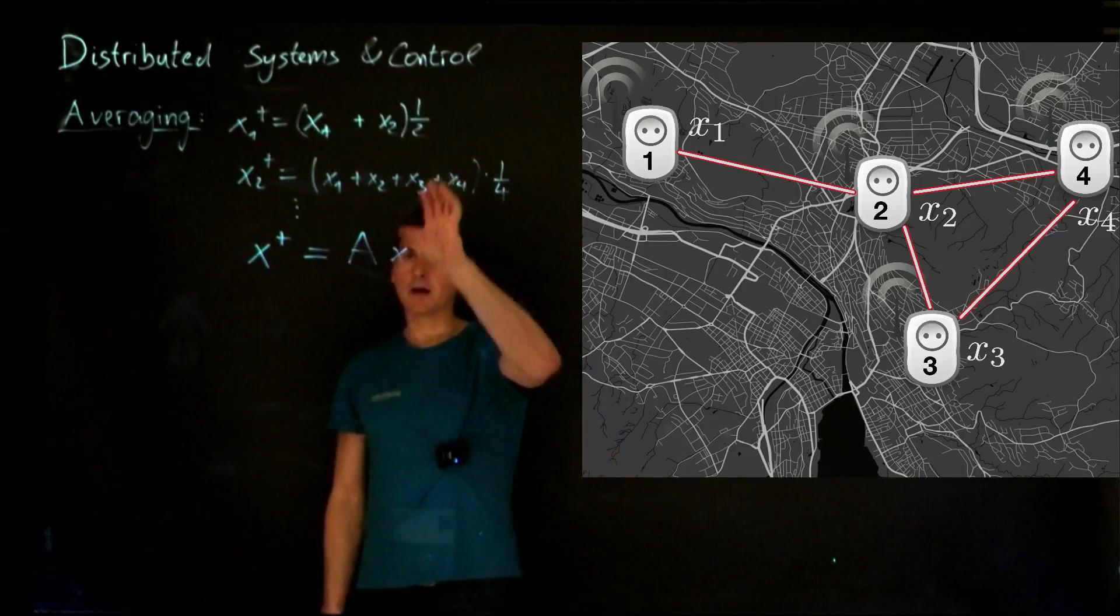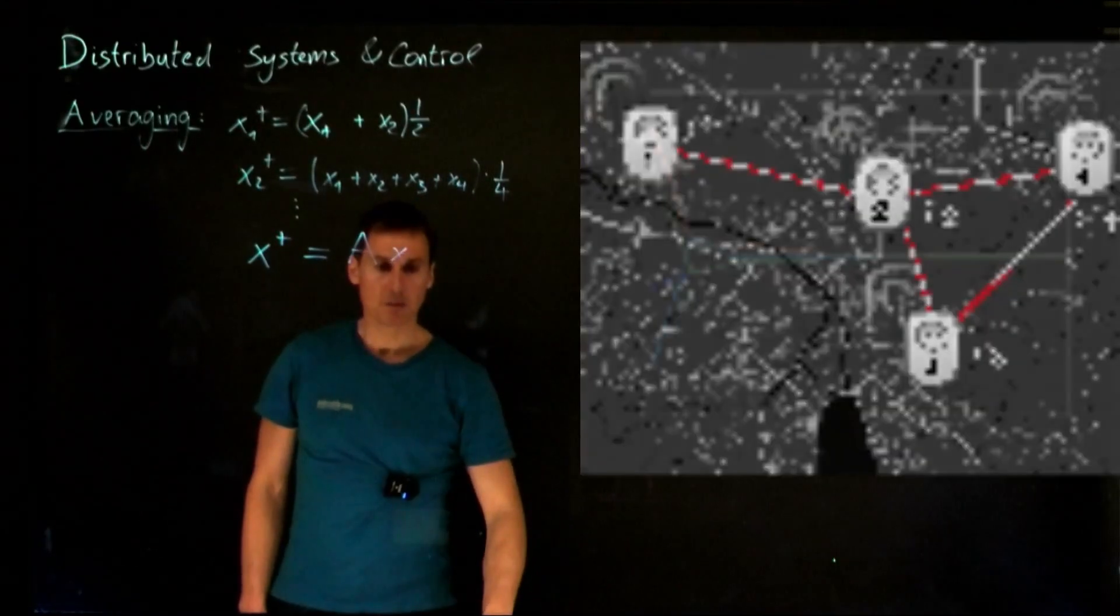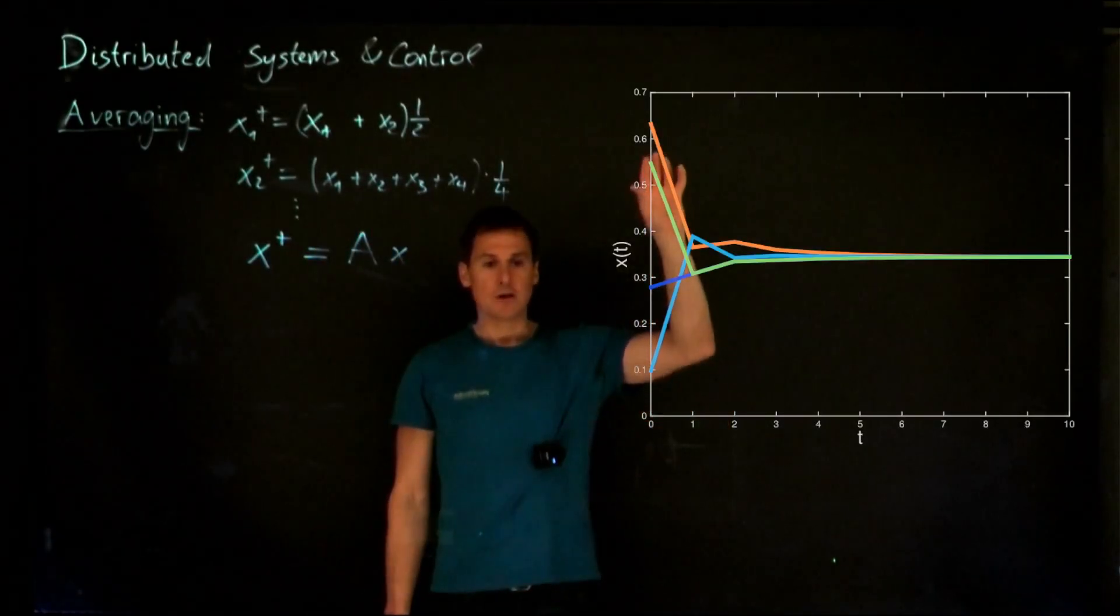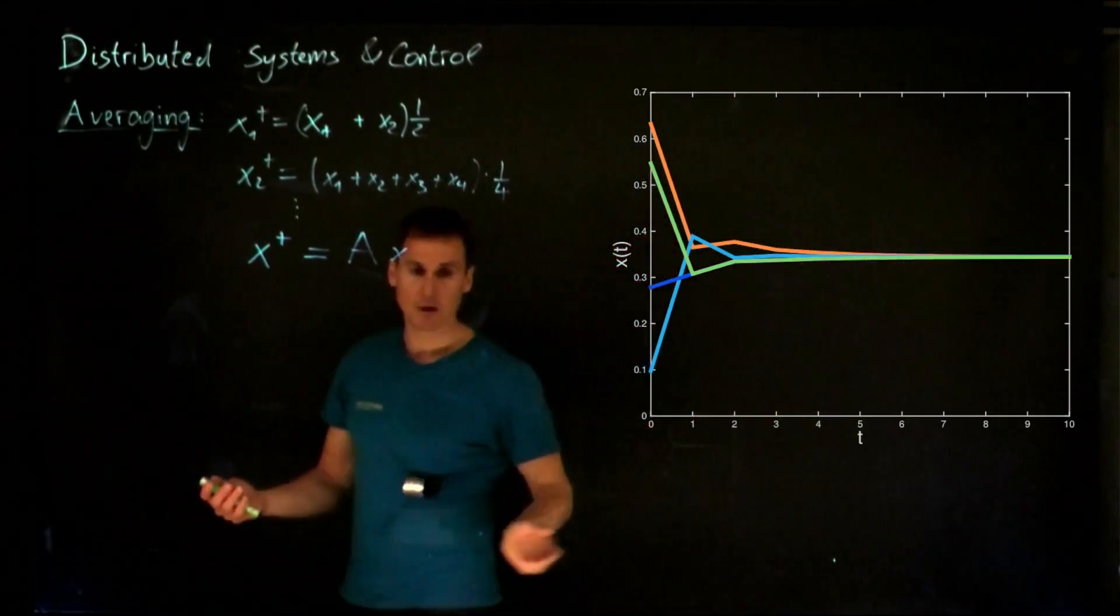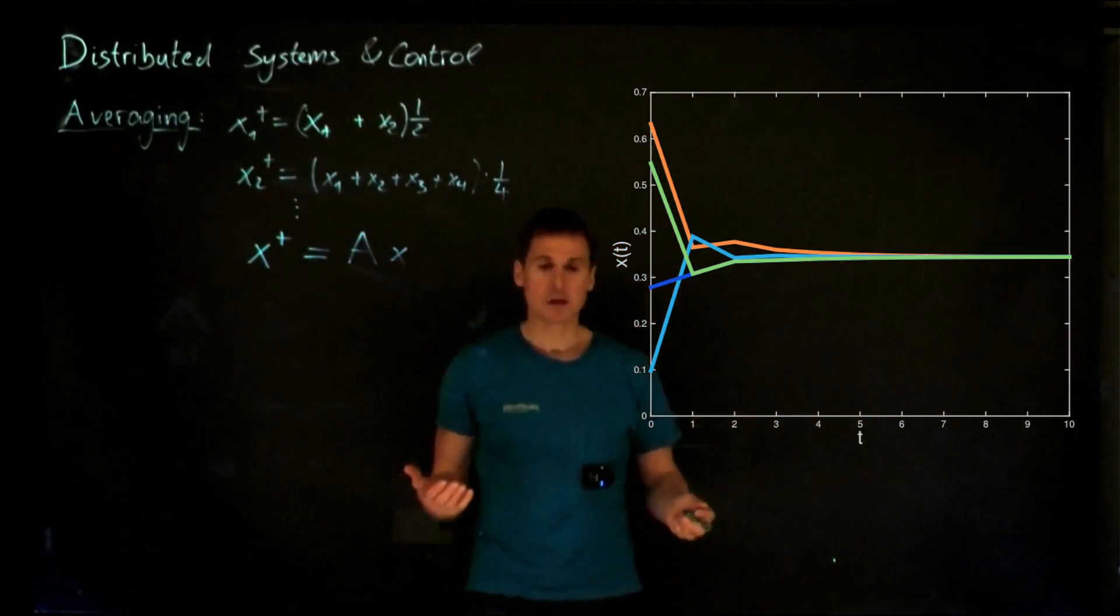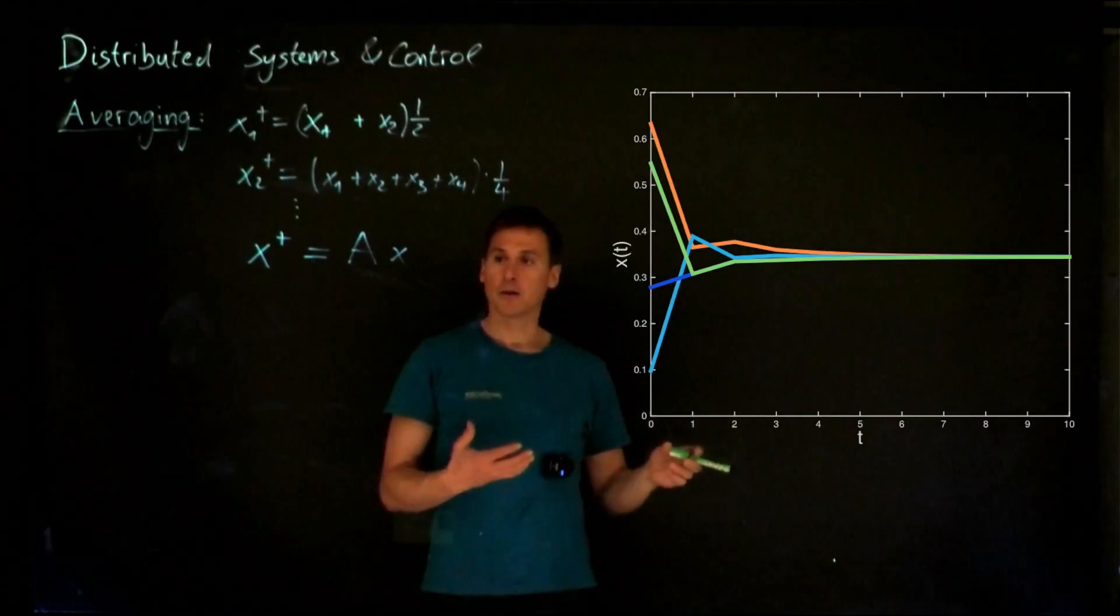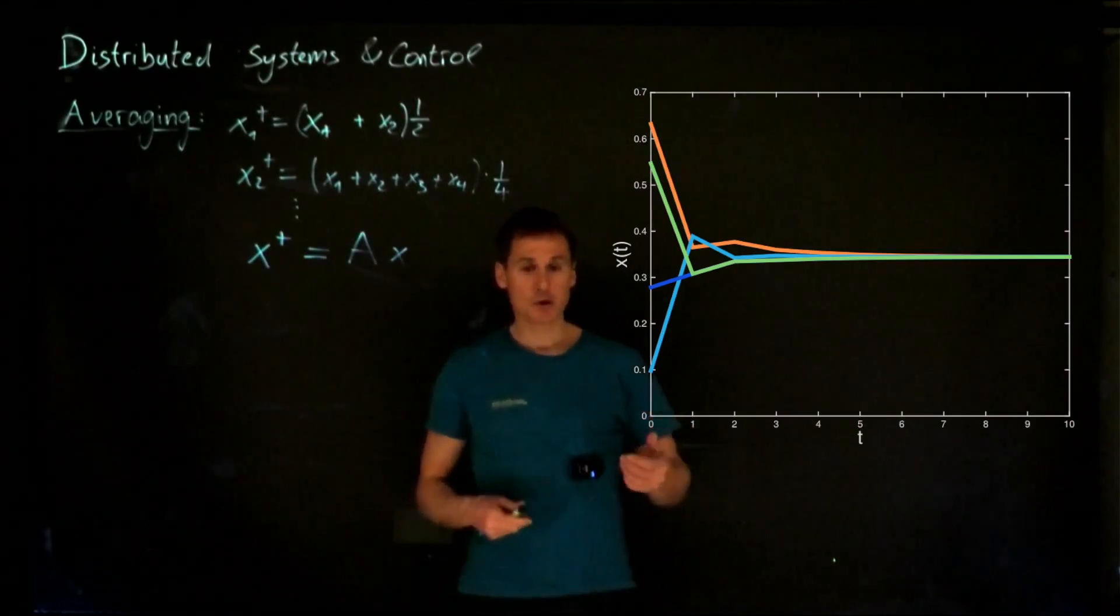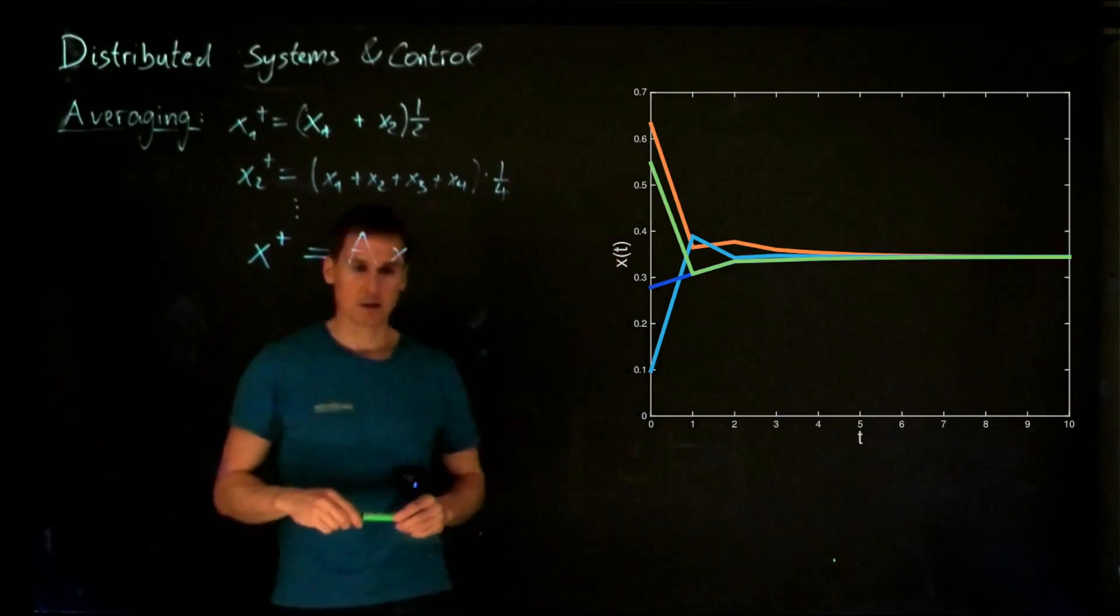Now, what happens when you carry out this algorithm and you keep on averaging? Well, if you're lucky, things are going to converge, which will actually be the case here for this particular example. So you start off with all the initial measurements, you execute like 2, 3, 4, 5 rounds of these algorithms, and you quickly converge to the average value. So we converge to the average of the initial conditions. And a question we now may ask is, well, will this always converge? How does convergence depend on the topology of the underlying graph structure of the sparsity pattern of the A matrix? Will it converge or not converge? How fast will it converge?